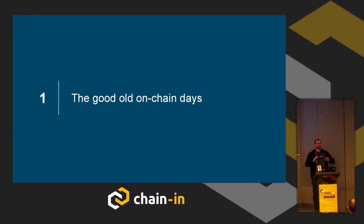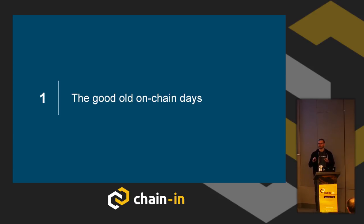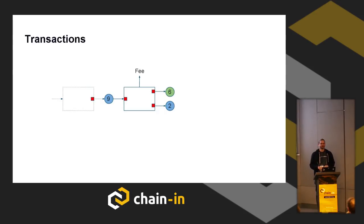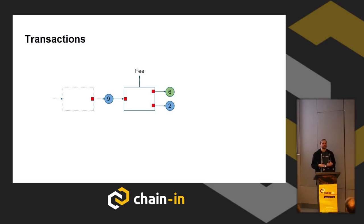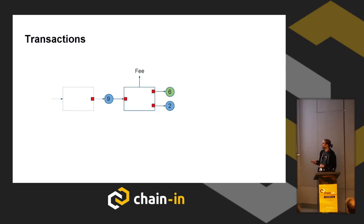Let's get started with the good old on-chain days — it's quite easy. Everybody could get Bitcoin. But for those not familiar with the UTXO model used in Bitcoin, I'll give a quick recap and introduce some pictograms because they get quite useful later on. Assume we want to pay somebody six Bitcoins — our goal is to have the green user have control over six Bitcoins in the end.